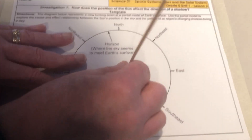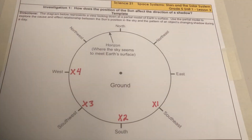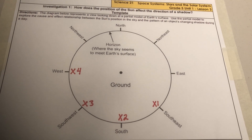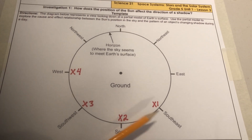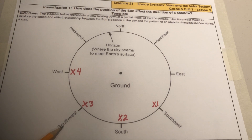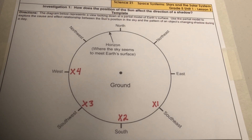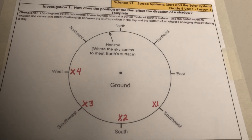Now I'll remove the template and replace it with one on which I've labeled four positions. You can see that x1 is southeast, x2 is south, x3 is southwest, and x4 is west. Label the four positions on the horizon as shown on your copy of the template. Your teacher will pause the video to give you time to label these four positions.